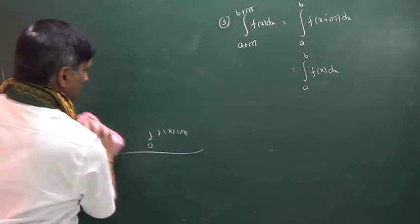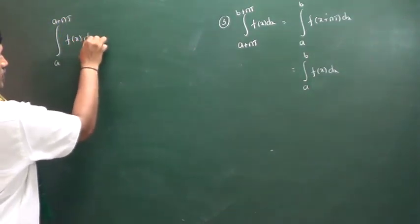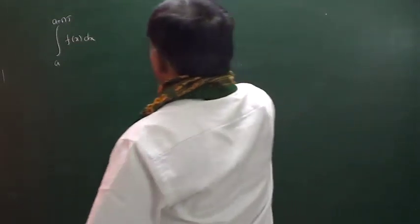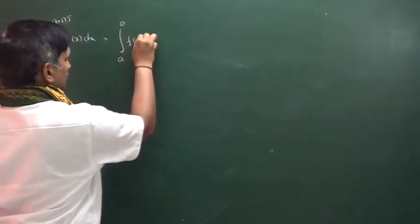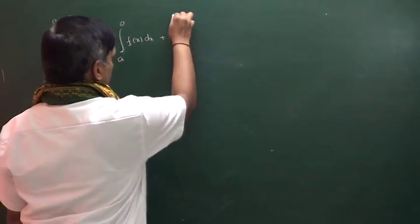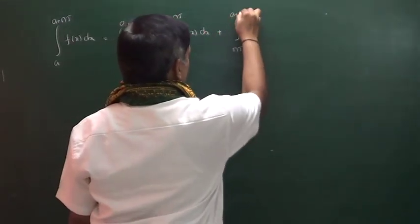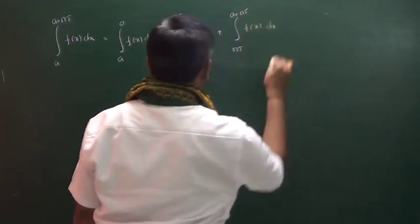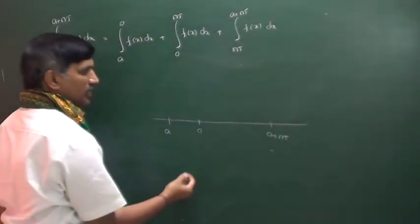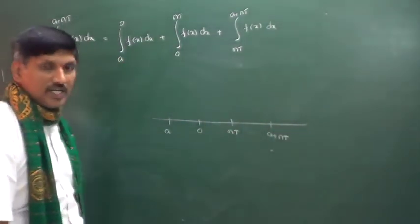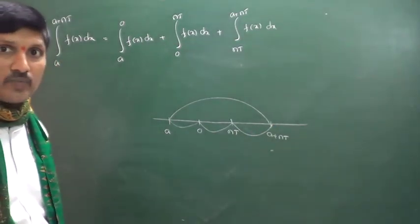The fourth property: the integral from a to a+nt of f(x)dx. We split this as: integral from a to 0, plus integral from 0 to nt, plus integral from nt to a+nt of f(x)dx. I split a to a+nt using intermediate points 0 and nt, so it becomes a to 0, then 0 to nt, then nt to a+nt.